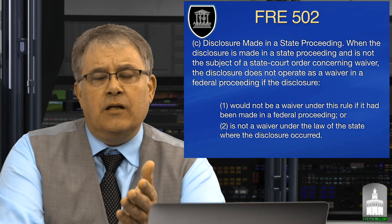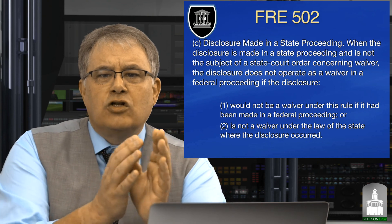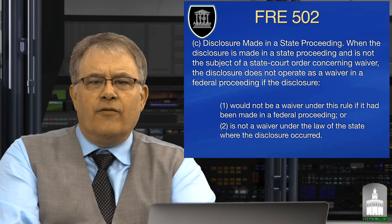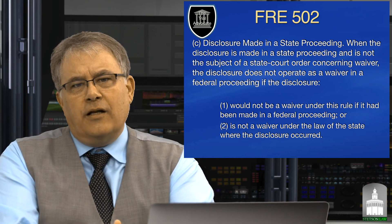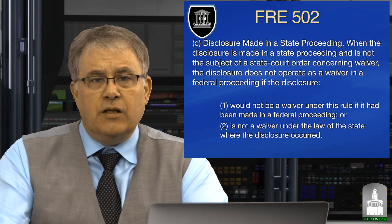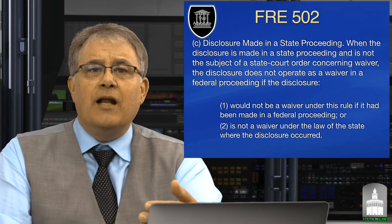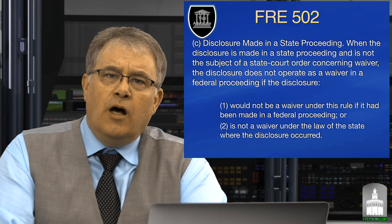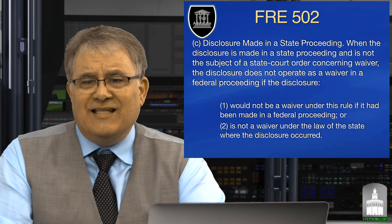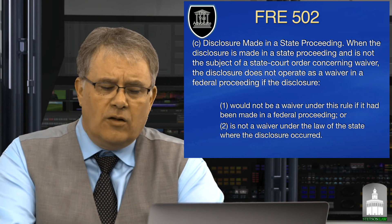What about disclosure in a state proceeding when you're also in federal court? Disclosure to the state without a state court order concerning waiver does not operate as waiver in the federal proceeding. It means I can disclose something in a state proceeding because it's advantageous to my client, but I have not automatically also disclosed it for purposes of a federal proceeding. You have to look at whether it's the kind of waiver under the rule and under the applicable state law.